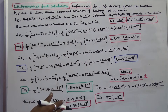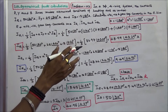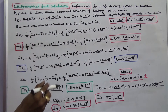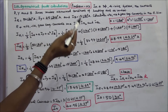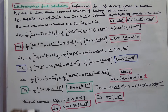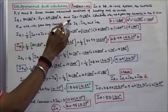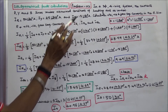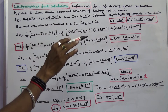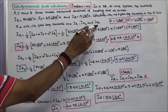In this class we work out a problem. In a 3-phase 4-wire system, the currents in R, Y, and B lines under abnormal conditions of loading are as follows: IR is equal to 50 angle 30 degrees, IY is equal to 25 angle 300 degrees, IB is equal to 15 angle 180 degrees. Calculate the positive, negative, and zero sequence currents in the R line: IR1, IR2, and IR0.